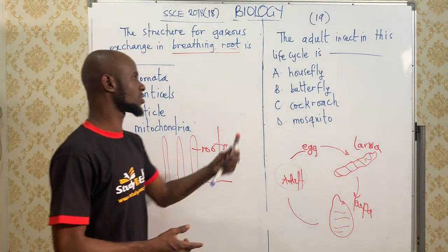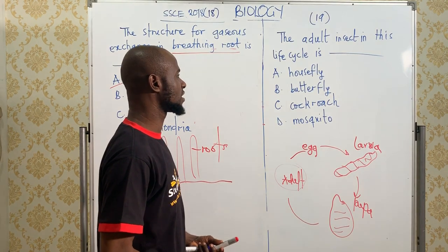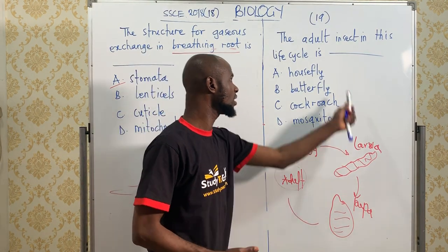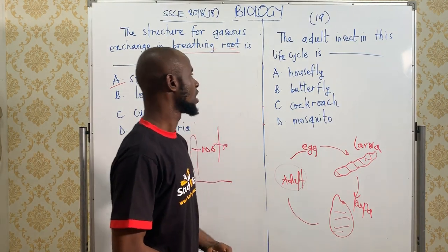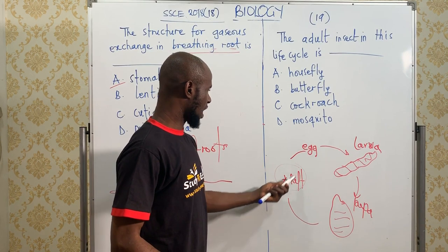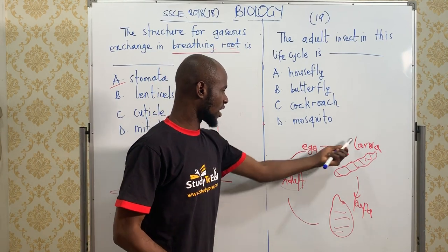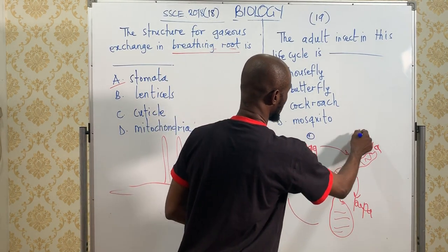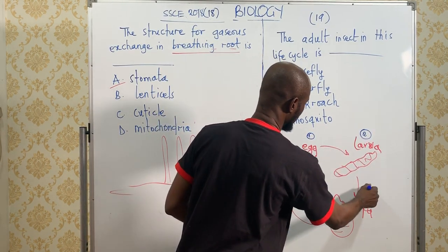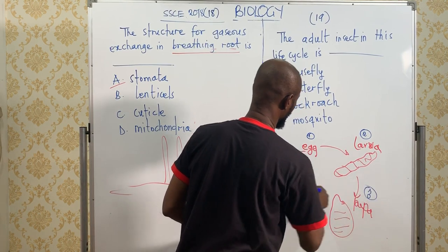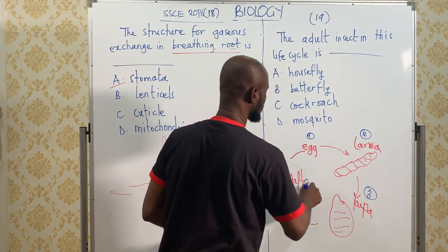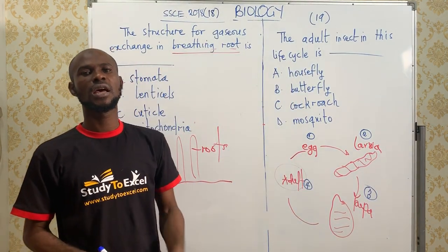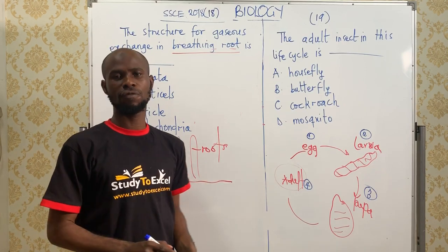So let's go to the next question. The adult insect in this life cycle is blank. Now let's look at this. We have the egg, we have the larva, we have the pupa, and we have the adult. This is called a complete metamorphosis.